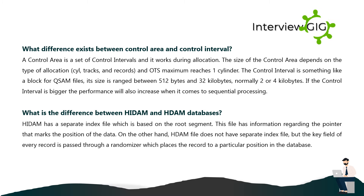What difference exists between control area and control interval? A control area is a set of control intervals and it works during allocation. The size of the control area depends on the type of allocation — cylinders, tracks, and records — and its maximum reaches one cylinder. The control interval is like a block for VSAM files; its size ranges between 512 bytes and 32 kilobytes, normally two or four kilobytes. If the control interval is bigger, performance will also increase for sequential processing.